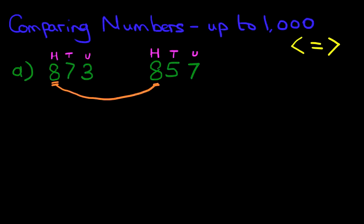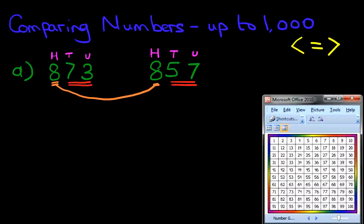we're going to look at the digits on the right. So here we've got 73 and 57. Now I'm sure you know this, but let's use the number grid just so we can illustrate this better.